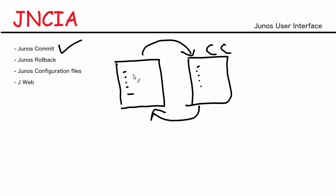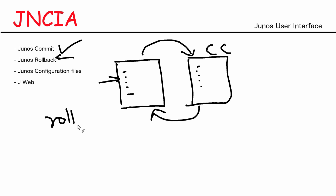The reason I'm talking about this is because we have a concept called rollback in Junos. The current active configuration — the configuration that is currently running on the device — is saved as rollback zero. Rollback zero is a configuration file that contains your current active configuration.